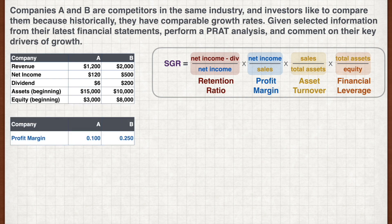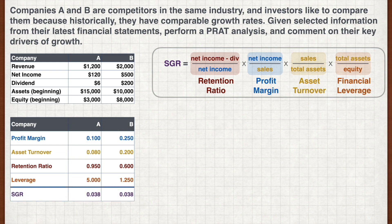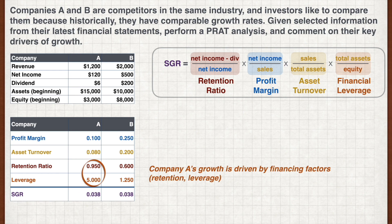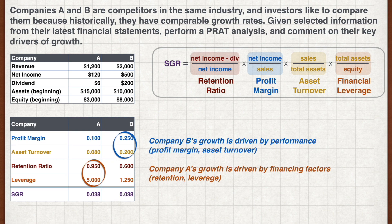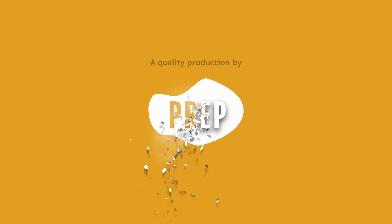Let's first calculate the profit margin, asset turnover, retention ratio, and financial leverage of the two companies. If we multiply all these ratios, their sustainable growth rates are quite close at 3.8%. However, Company A's growth is comparatively driven more by financing factors — its retention and leverage ratios are much higher than Company B. Company B's growth, on the other hand, is driven more by its performance; its return on assets is 5% compared to 0.8% for Company A.